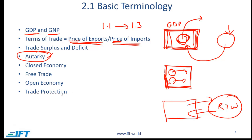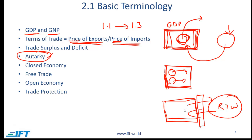Trade protection: even though there might be trade with the rest of the world, some countries impose trade protections. For example, some countries impose tariffs or quotas to encourage local producers, or there may be export subsidies. These are items we will cover later in the reading.